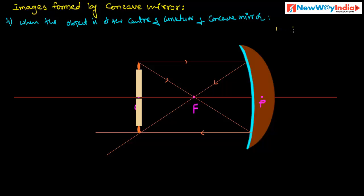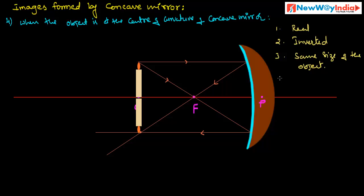The characteristics of this image are: it is a real image, it is inverted, and the size of the image is the same size as the object. It is formed at C — when you place the object at C, the image is also formed at C.